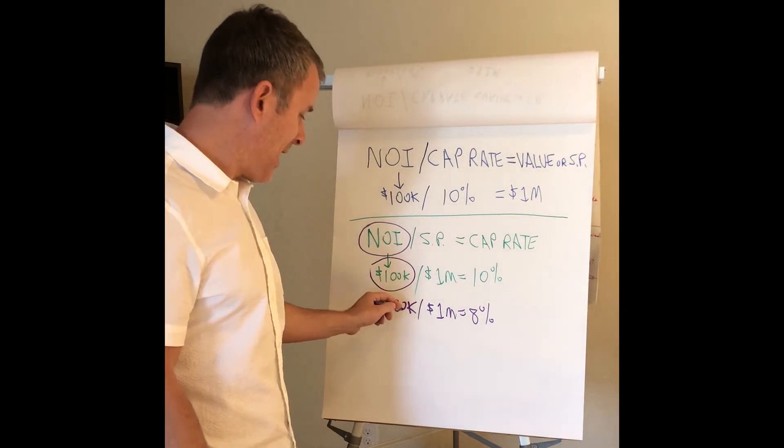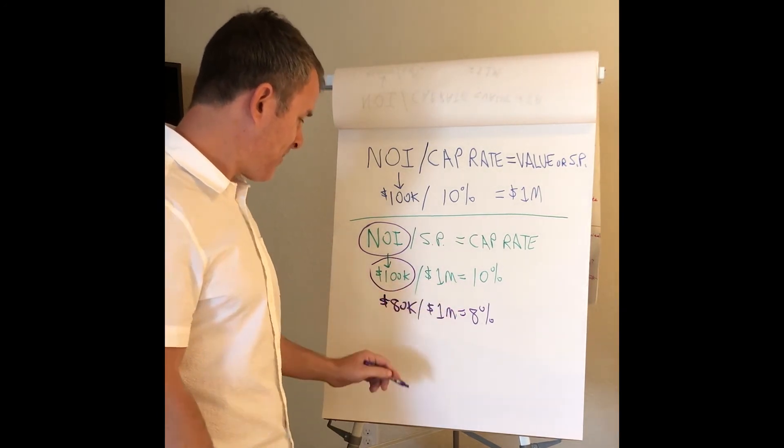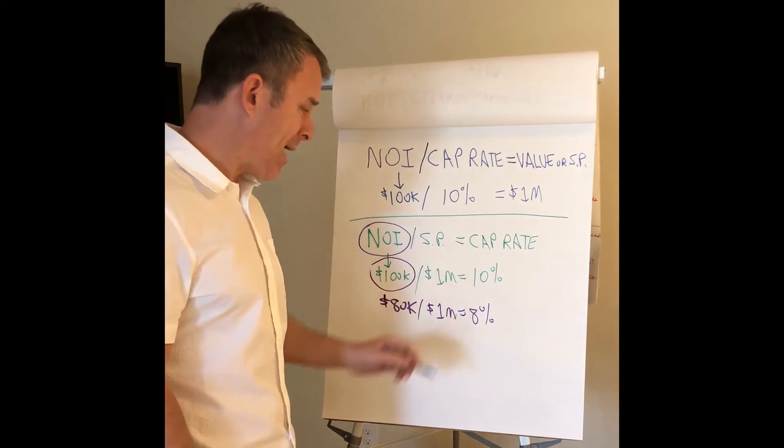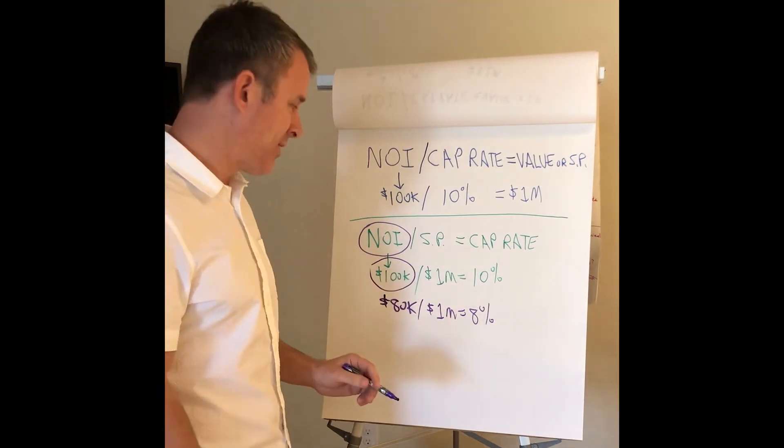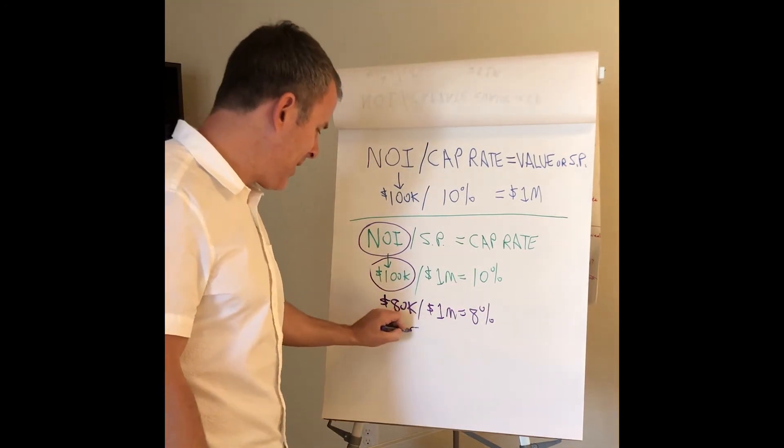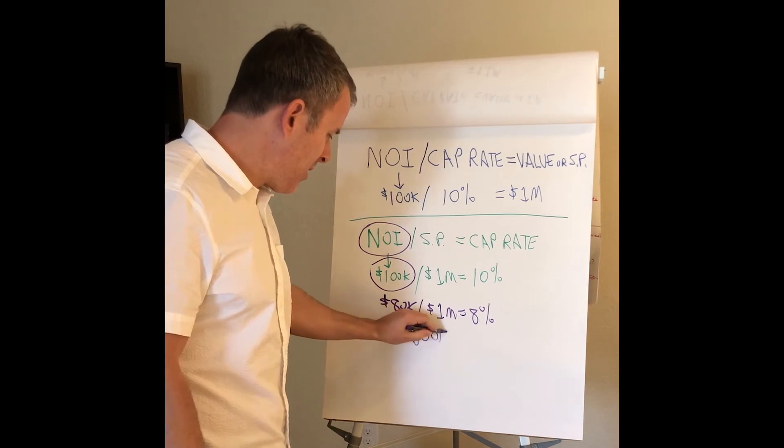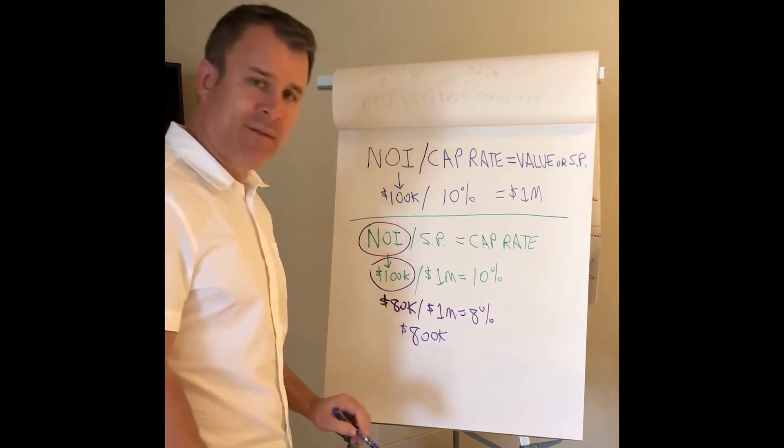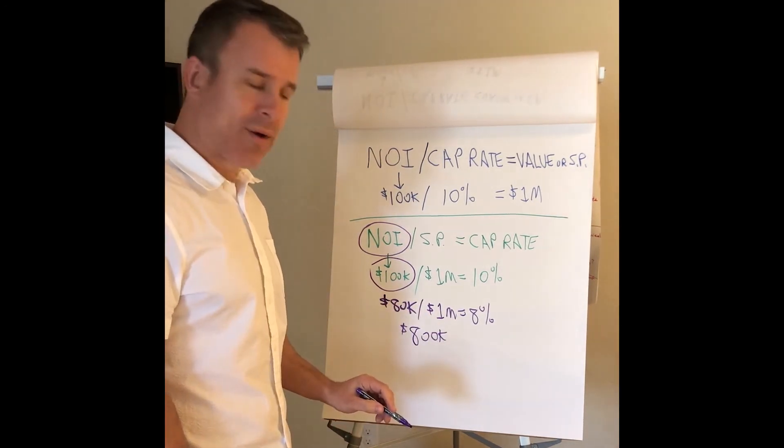So if I say, $80,000 divided by $1 million is an 8 cap. If I really want a 10 cap for a property, which is pretty hard to do this day and age, I should only be paying $800,000 for the property.